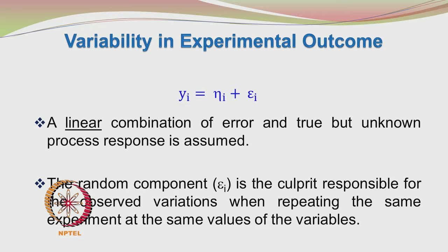What we have also implicitly assumed is the combination of the true value and the error is a linear one. We are putting epsilon_i added on to eta_i — a linear combination. We did not put eta_i into exponential of epsilon_i or sign of epsilon_i. We did not have a non-linear combination. We are having a linear combination: simple addition of the error term to the expected response. This random component epsilon_i is the main reason for the variations we observe in the experiment.